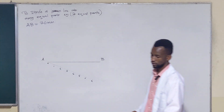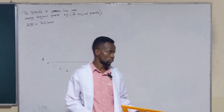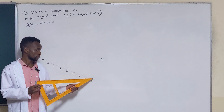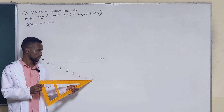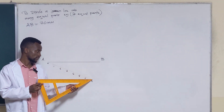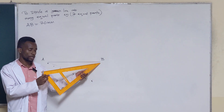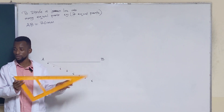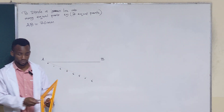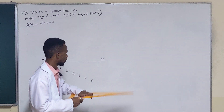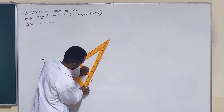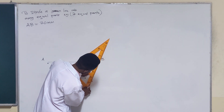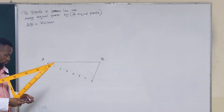The next step is to draw a line connecting point seven to point B — the last point on the slant line to the last point of the given line. Draw a straight faint line.